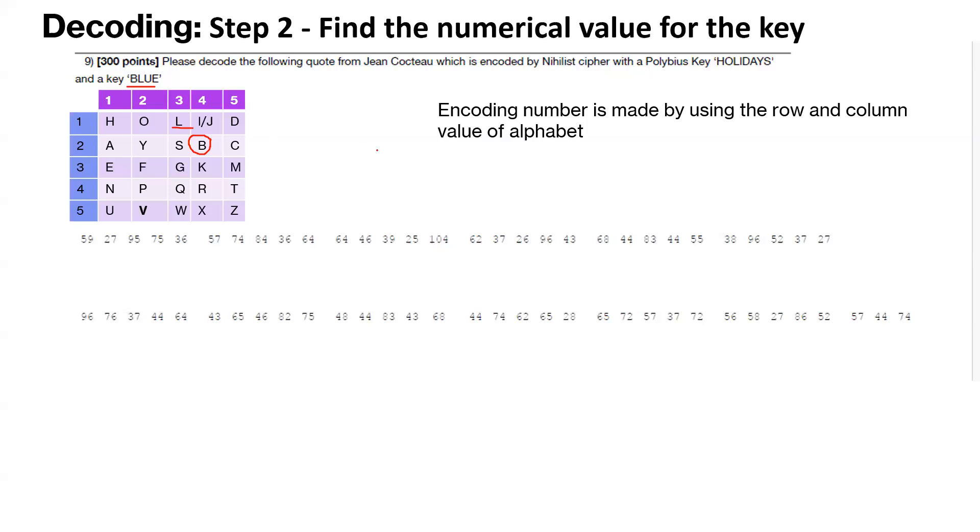So L is 13, first row, third column. So the encoding for blue is 24, 13, 51, 31. That is the encoding.